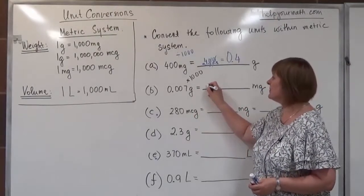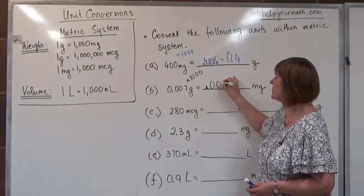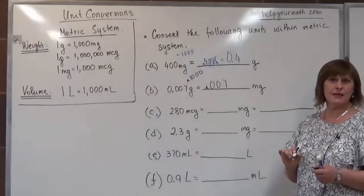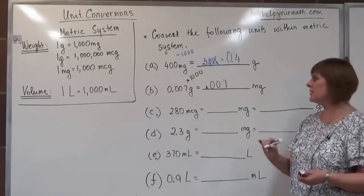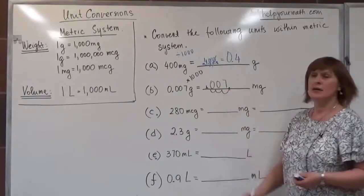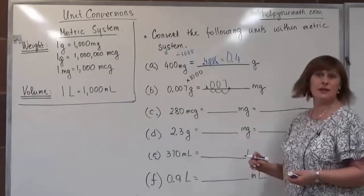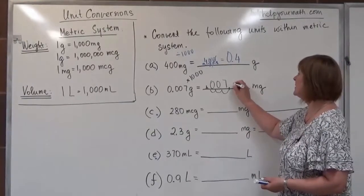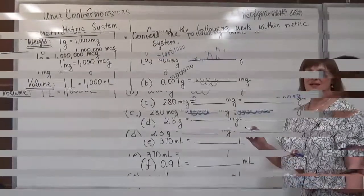To multiply, we drop the previous decimal point for the number 0.0007 and shift the decimal point in the opposite direction. Multiplying by 1,000 makes our number larger, so instead of 0.0007 we get 7. The answer is 7 milligrams.